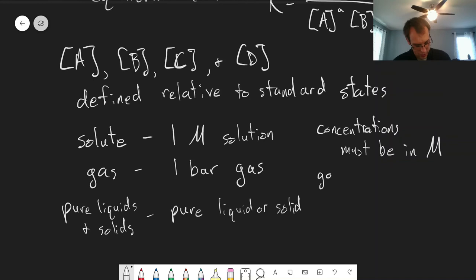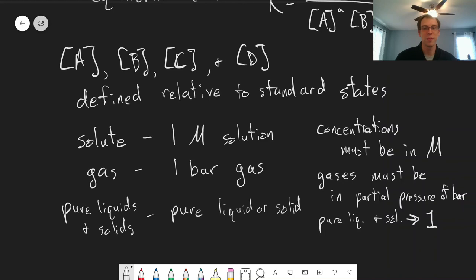Gases must be in partial pressures of bar. So whatever units you may measure it in, you have to convert it to these units to use it in an equilibrium constant. And then for pure liquids and solids, they don't show up in an equilibrium constant. So the units here don't matter because a pure liquid or a pure solid doesn't matter in terms of the equilibrium. Their concentration goes to 1, and so they just don't show up in an equilibrium constant.